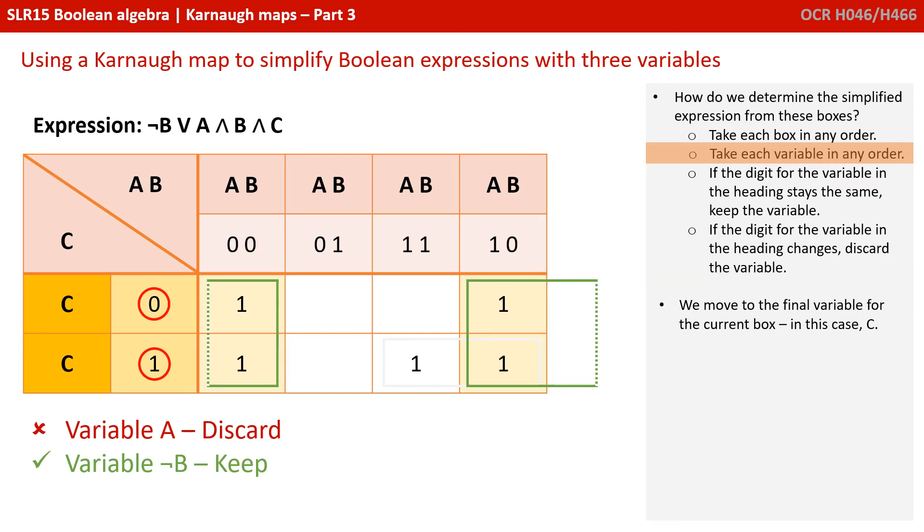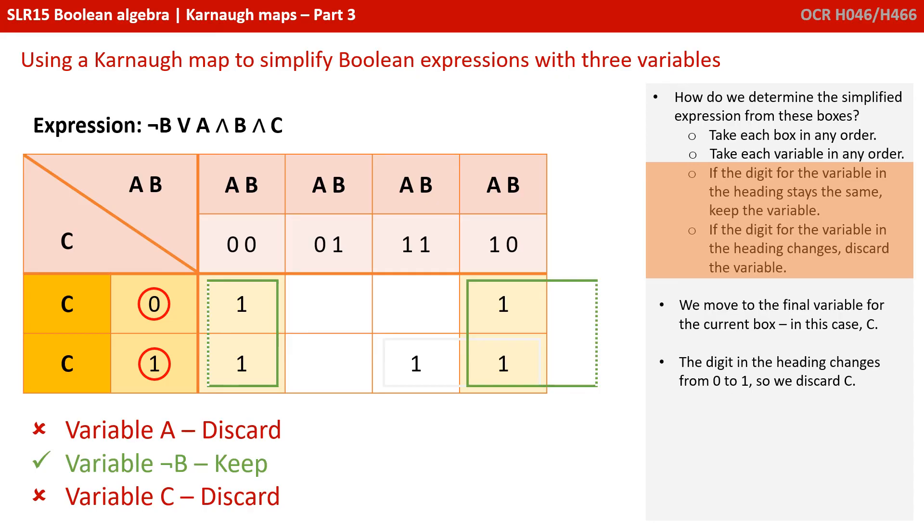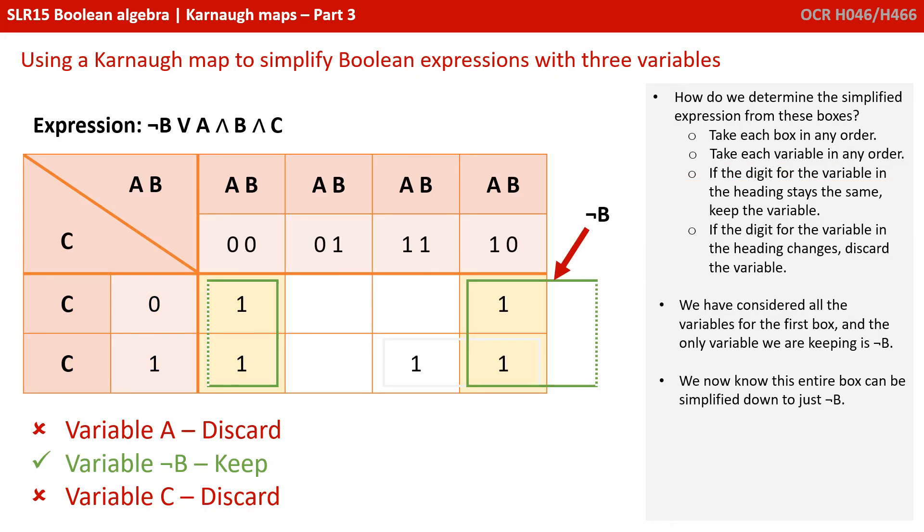We move on to the final variable C. And we can see the binary digit in the heading for variable C changes from a 0 to a 1. So we discard C. Okay, we've considered all the variables for the first box. And the only variable we're keeping is NOT B. We now know this entire box could be simplified down to just NOT B.